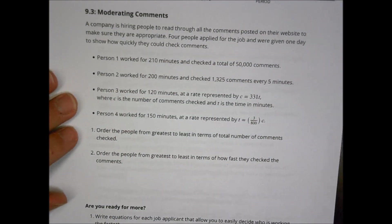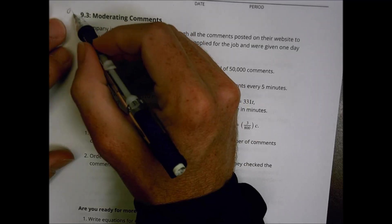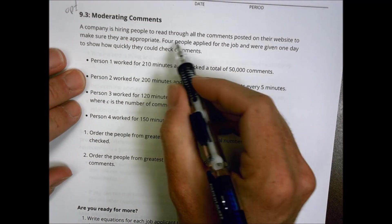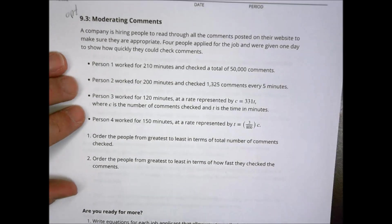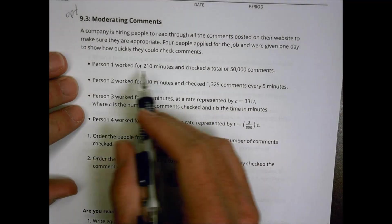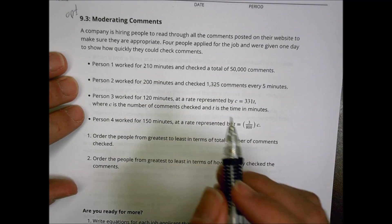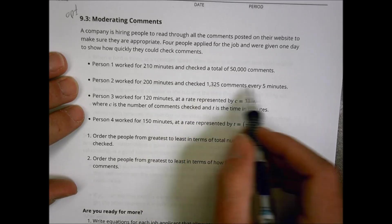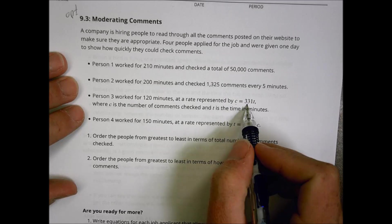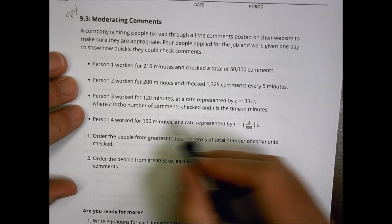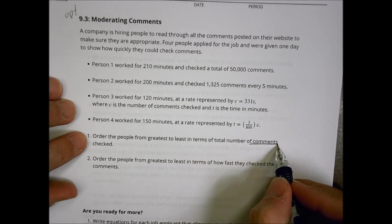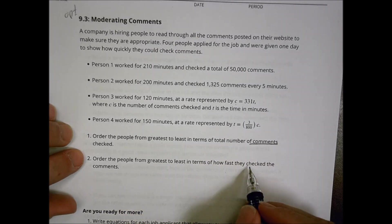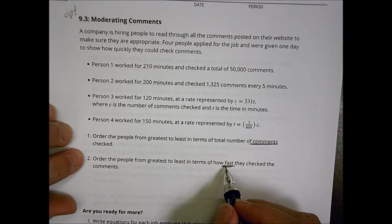The next activity, 9.3 — Moderating Comments — is an optional one that you might have done. A company is hiring people to read through all the comments posted on their website to make sure they are appropriate. People applied for the job and were given one day to show how quickly they could check comments. We want to order the people from greatest to least in terms of total number of comments checked, and then order them from greatest to least in terms of how fast — their speed.